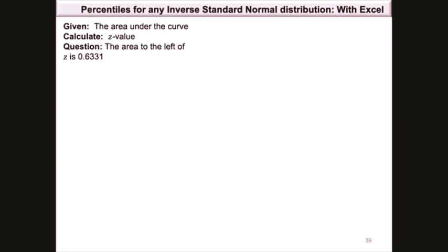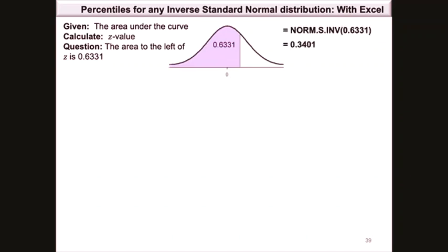When the area under the curve is given and we need the z value, we use norm.s.inv. For the first question, the area to the left of z is 0.6331. Using =norm.s.inv(0.6331) gives z = 0.3401. The norm.s.inv function only requires the probability as input.